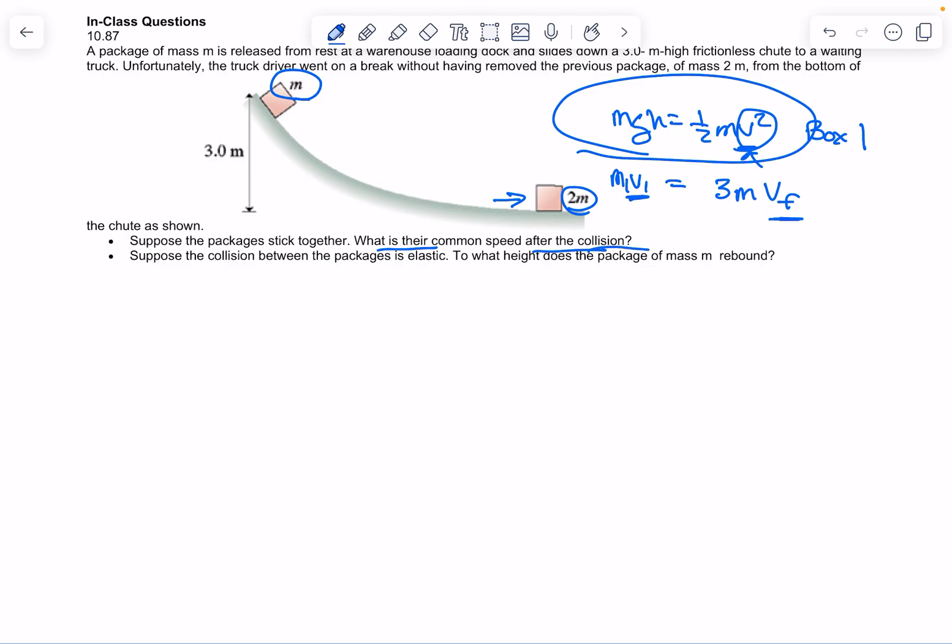However, part b is a bugger. So if it's an elastic collision, what you're going to have to do, and again, elastic collisions, remember both momentum and kinetic energy are conserved, then you're going to say m1 v1 plus 0, because block 2 or box 2 is not moving, would be equal to m1 v1. This number, by the way, will still be this number here, plus m2 v2.